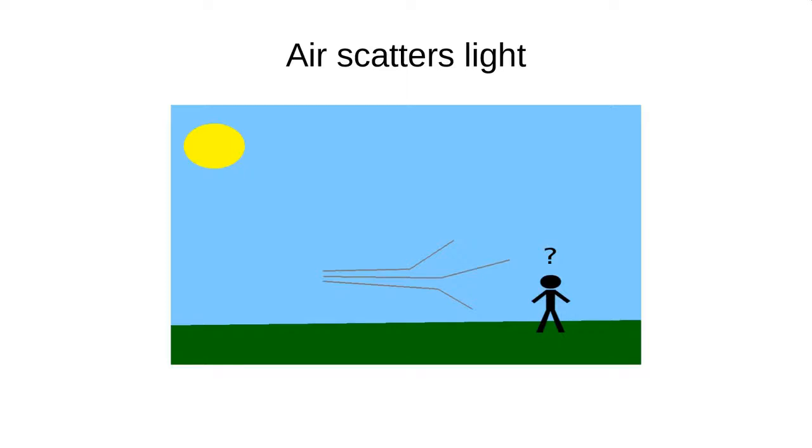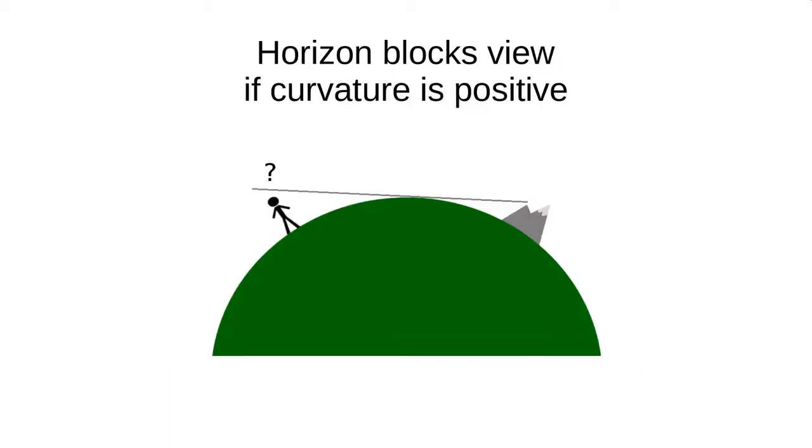So even if the Earth was flat, you wouldn't necessarily be able to see mountains thousands of kilometers away for this reason. And finally, if in fact the curvature of the Earth is positive, then at some point it disappears behind the horizon, again making it difficult to determine the overall size and shape through direct observation.